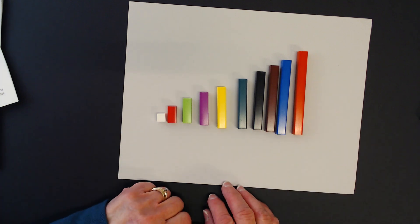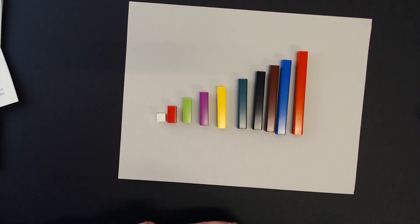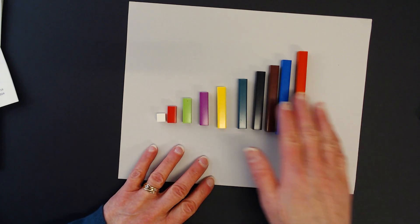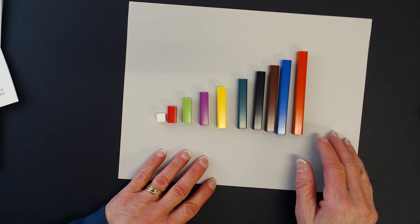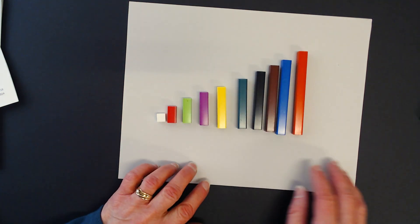These are Cuisenaire rods. We can use them in a variety of ways to explore concepts in mathematics. One of the great things about them is that they have no markings on them, so we can work with the rods in relation to one another.